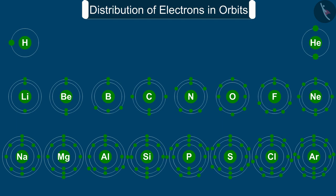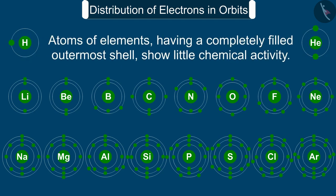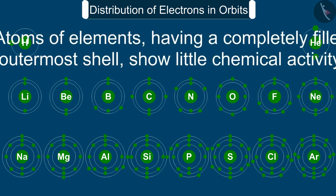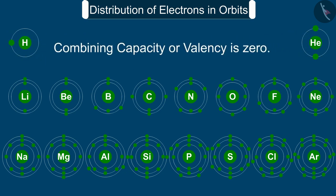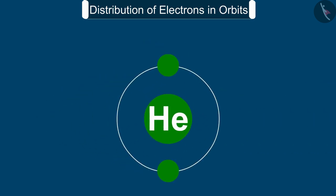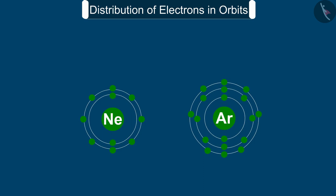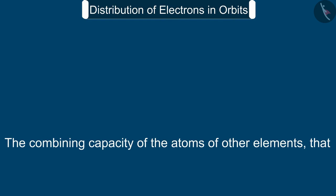We also know that the outermost shell of an atom can accommodate a maximum of 8 electrons. It was observed that the atoms of elements having a completely filled outermost shell show little chemical activity. In other words, their combining capacity or valency is zero. Of these inert elements, the helium atom has two electrons in its outermost shell and all other elements have atoms with eight electrons in the outermost shell.